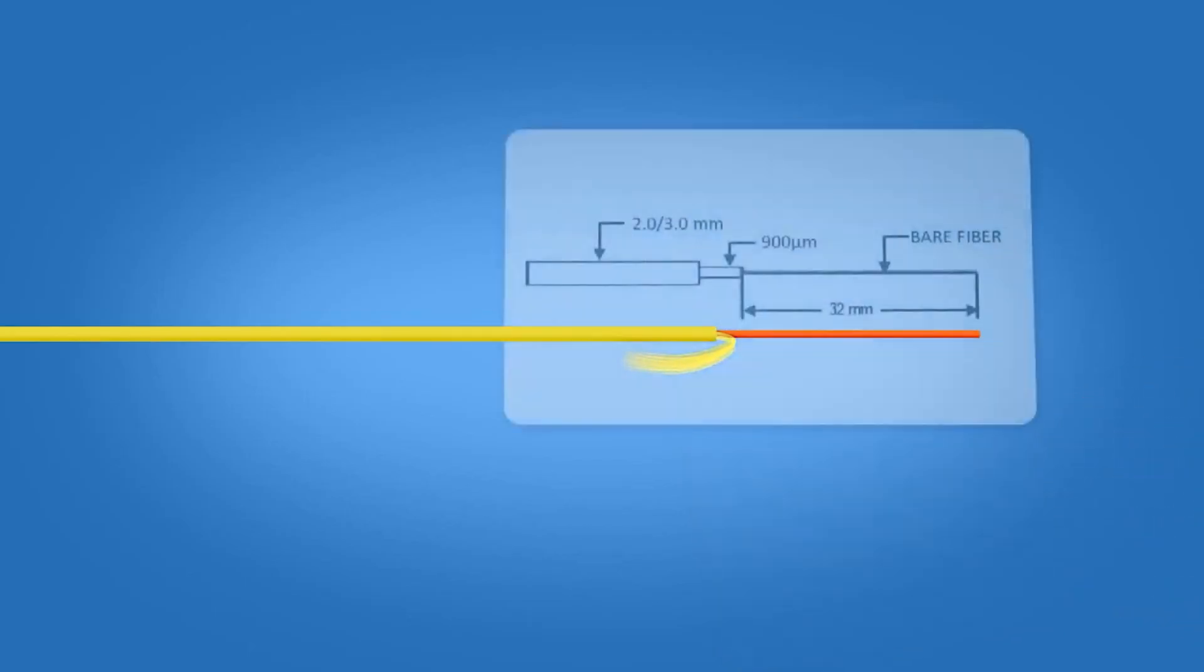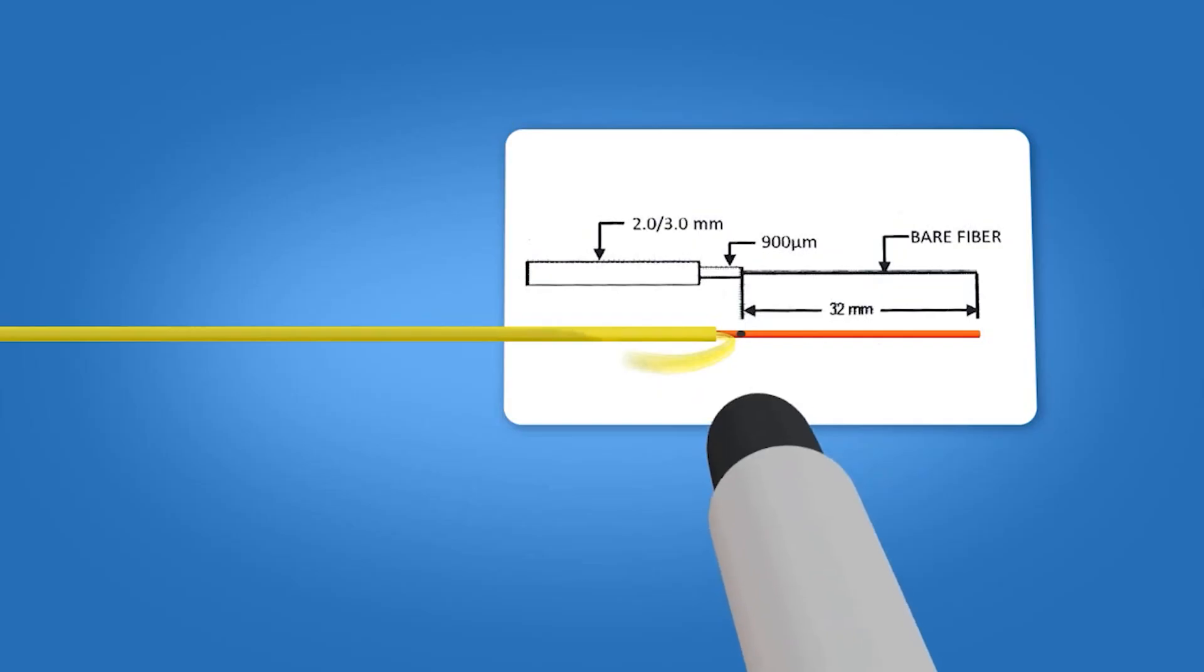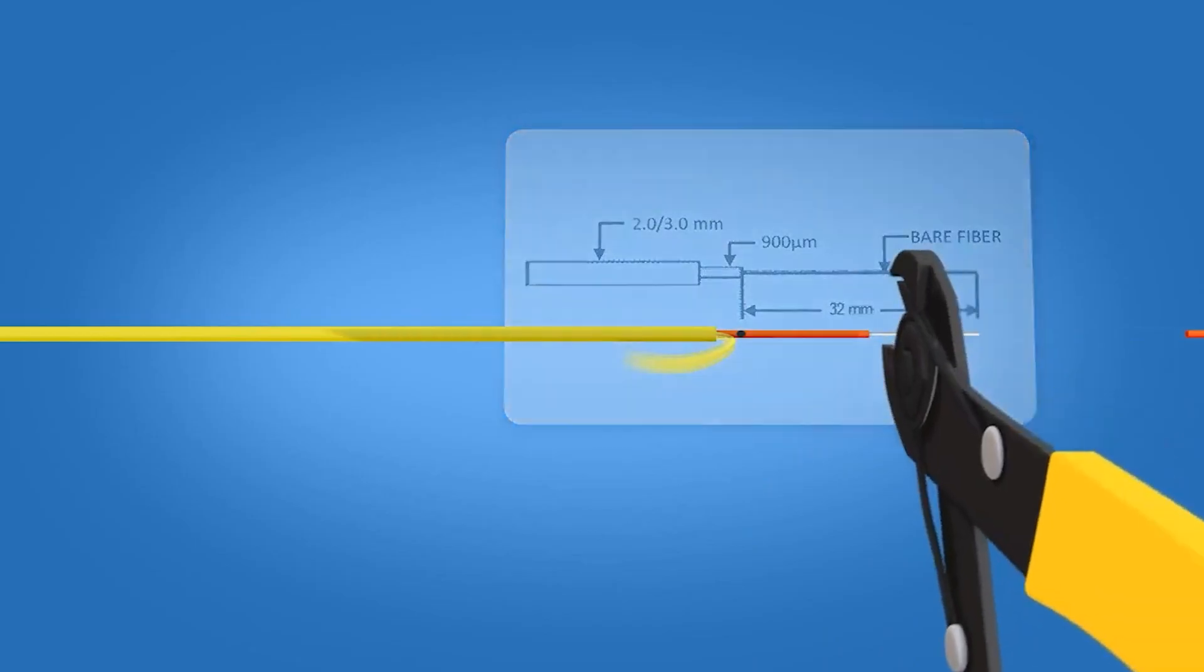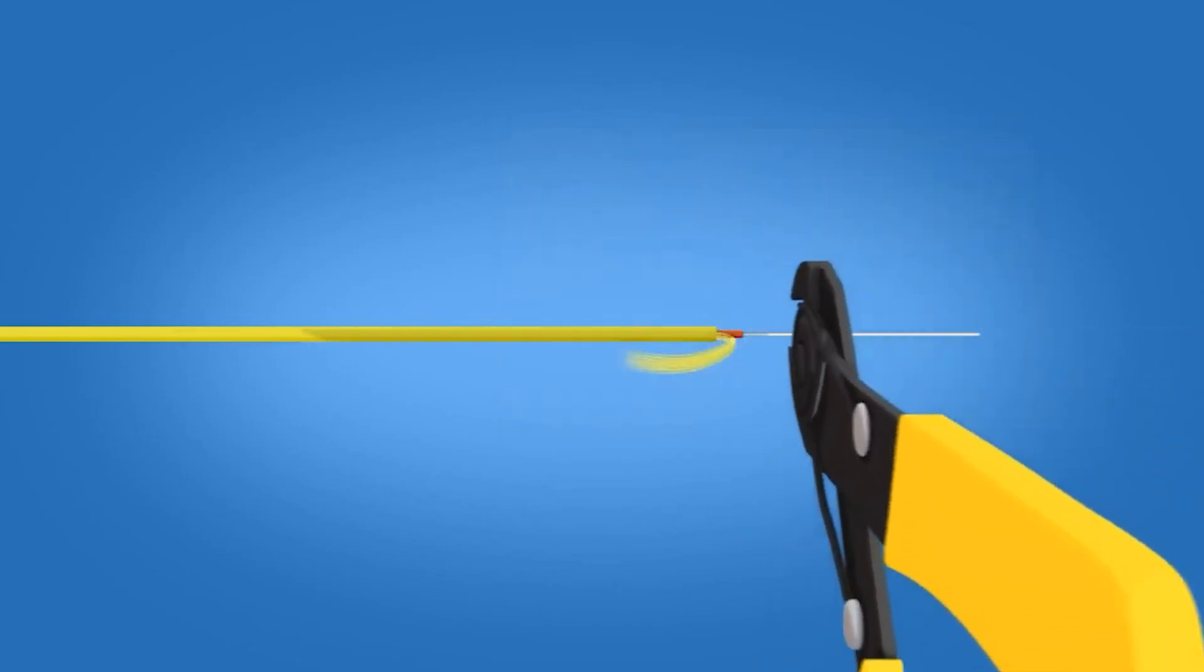Using the template on the front of the connector packaging, mark the fiber at 32 mm from the end of the 900 micron fiber. Strip 32 mm of 900 micron and 250 micron coating off, exposing the bare fiber. Clean the fiber with a lint-free wipe and fiber preparation fluid.